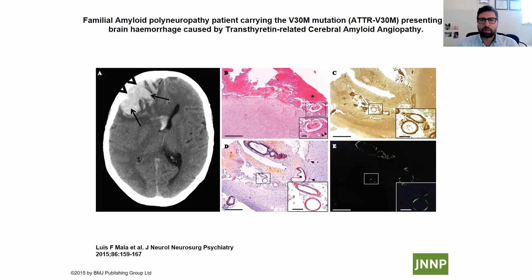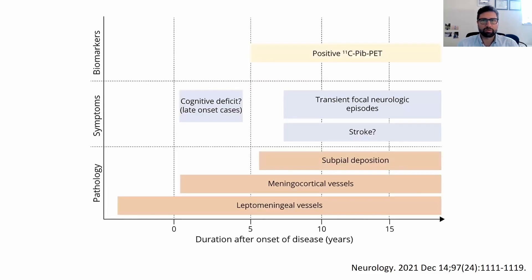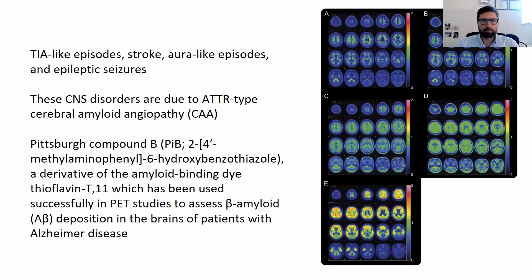Amyloid can deposit in blood vessels and in the brain, causing bleeding and leptomeningeal infiltration. As we treat patients with TTR silencers — which mainly target the liver — and follow them long enough, we may see more and more CNS manifestations. This can be demonstrated with brain imaging and PET scans showing amyloid deposition in the brain.